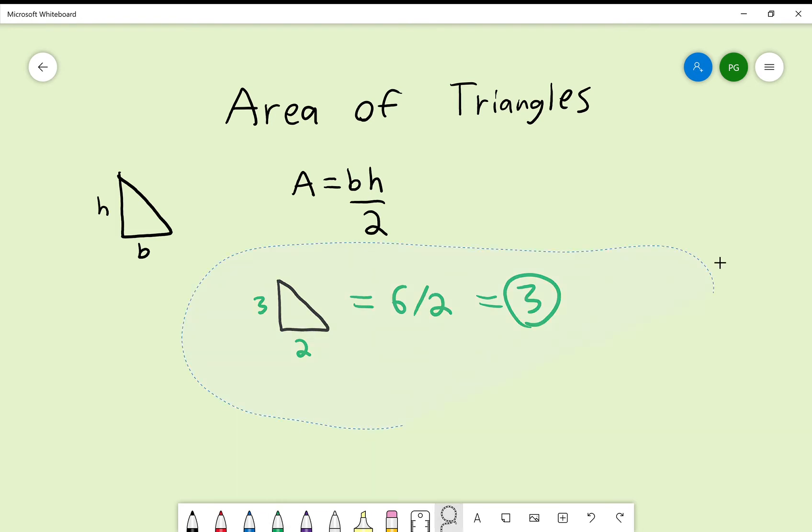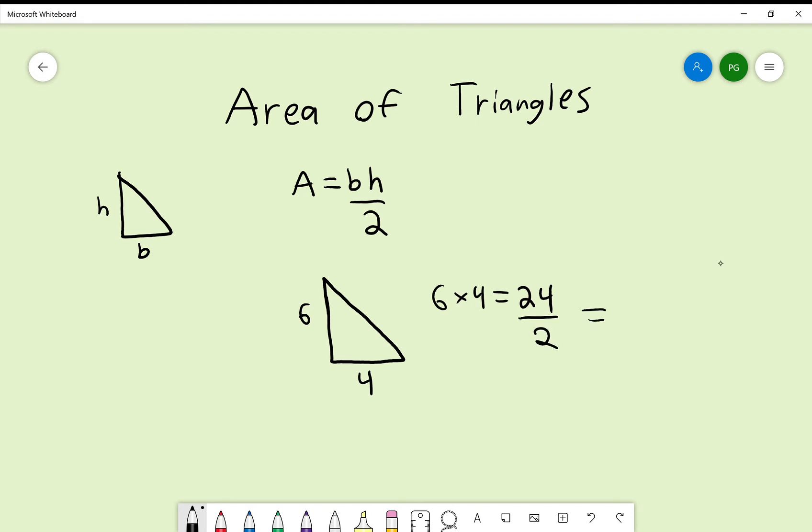Let's do another example. Let's say that this is 6 and this is 4. Okay, let's find it out. 6 times 4 will be 24. Are we done? No! You have to divide by 2. 24 divided by 2? 12. Congratulations! You found the area of your triangle. It really is incredibly easy.